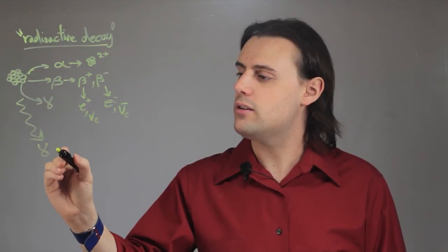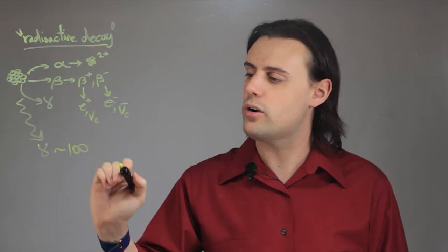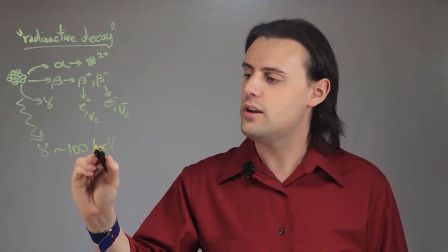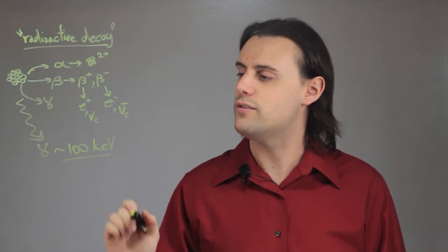These gamma rays are known to have energies of approximately, or on the order of, 100 keV, which is 100,000 electron volts. That is very high energy for a photon.